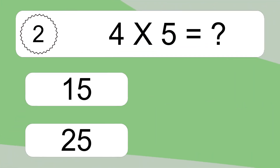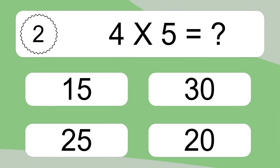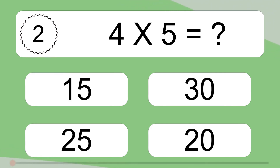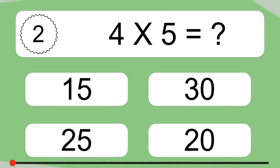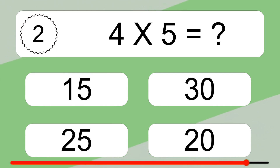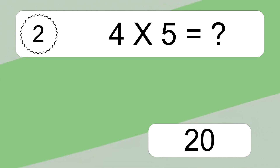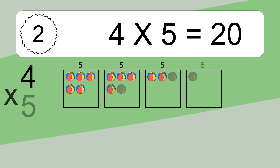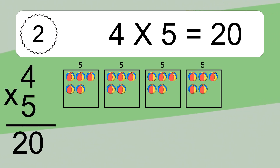4 times 5 equals what? 4 times 5 equals 20.